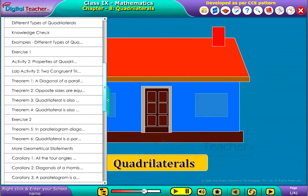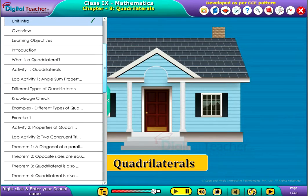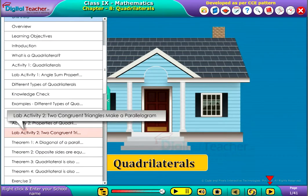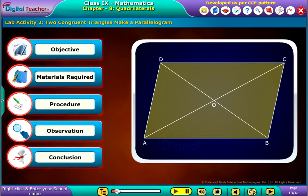Welcome to the chapter quadrilaterals. We are going to do a lab activity on making a parallelogram using two congruent triangles.